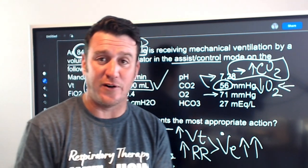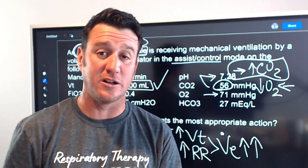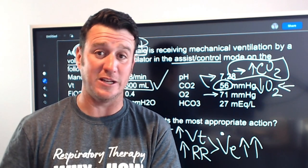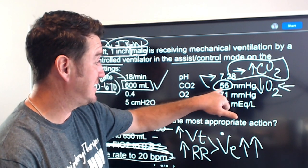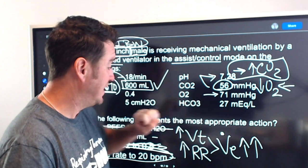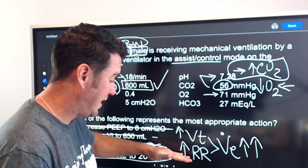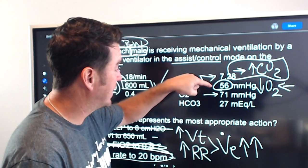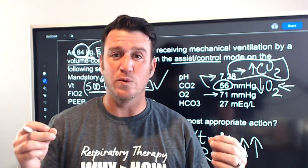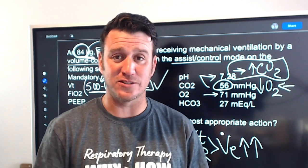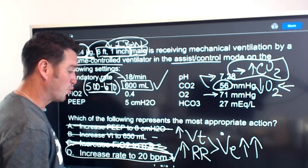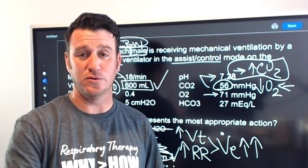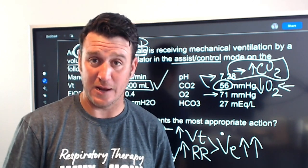Since the tidal volume is already within the 6 to 8 mL/kg range, the best answer is to increase the respiratory rate to 20. Increasing the rate will increase minute ventilation, bring the CO2 down, and get the pH back up to normal. The best answer per TMC standards is to increase the respiratory rate.